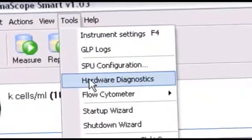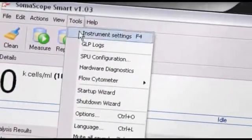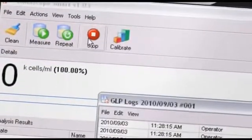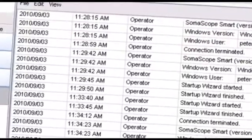The software also includes checking and adjusting areas of the hardware. Another useful tool is the GLP log. This stands for Good Laboratory Practice and it enables the user to track all the previous actions.